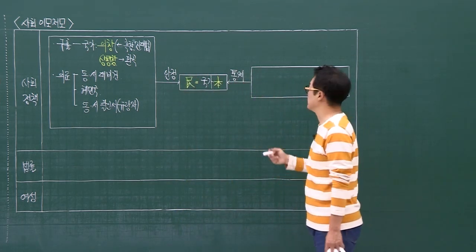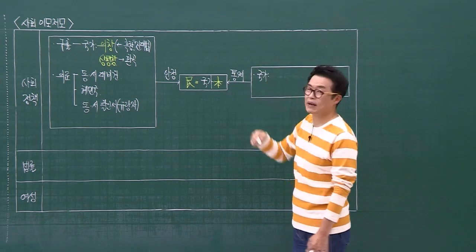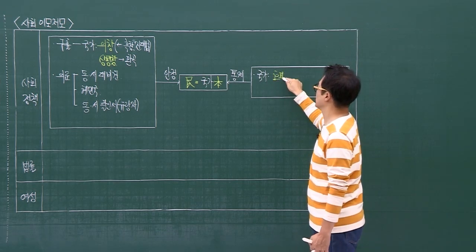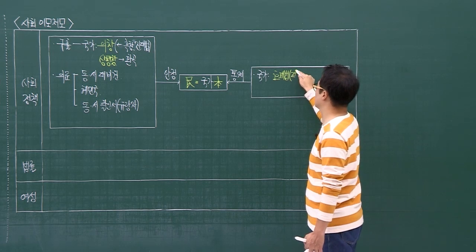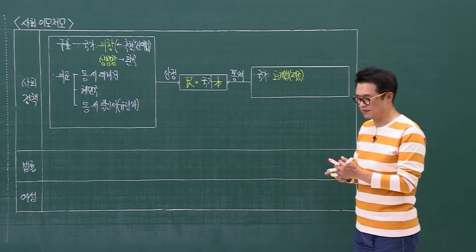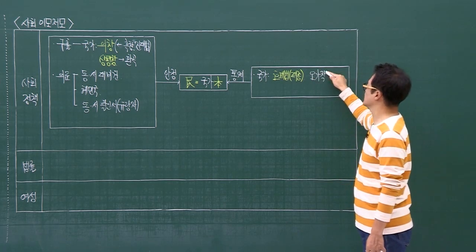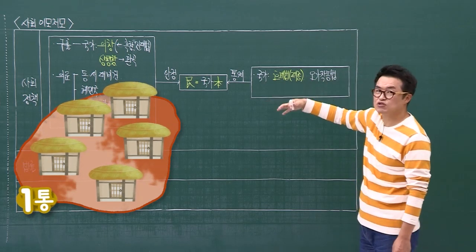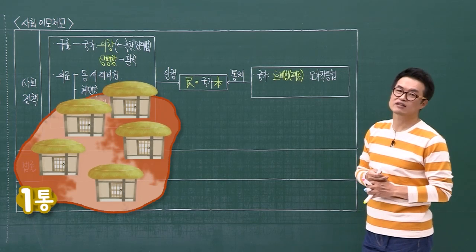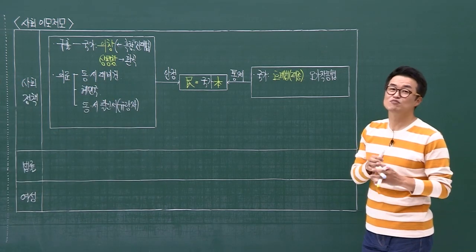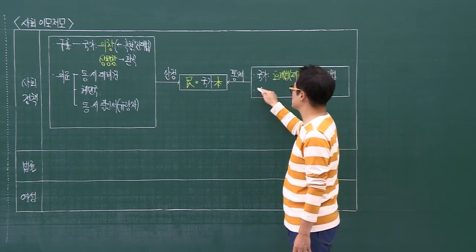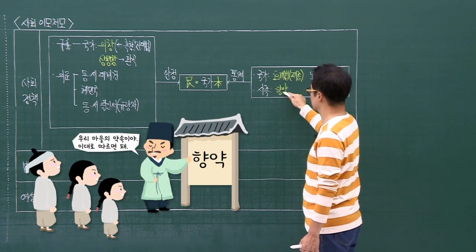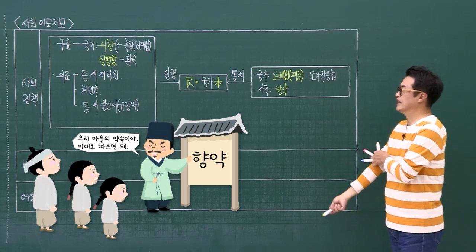국가가 통제하는 방식으로 주민등록증 같은 호패법이 있어요. 호패법을 처음으로 시작했던 왕은 태종 이방원이었다는 걸 배웠습니다. 그리고 서로를 감시하게 만드는 오가작통법이 있어요. 다섯 개의 집을 묶어서 서로 감시하도록 하는 거예요. 만약에 한 집이 도망갔으면 남은 네 집에서 세금을 또 부과해야 되니까 다른 가족을 위해서라도 도망갈 수 없는 거죠. 사족들은 향약을 통해서 농민들을 통제했습니다.